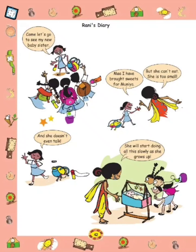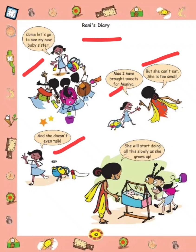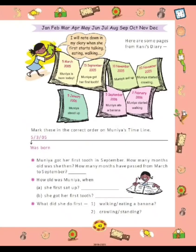Now here is Raini Dari. Come, let's go to see my new baby sister. Maa, I have bought sweets for Muniya. But she cannot eat — she is too small, and she doesn't even talk. She will start doing all this slowly as she grows up. All of us know that when a baby is born, he or she does all things slowly. Here is a record of Muniya's growth.